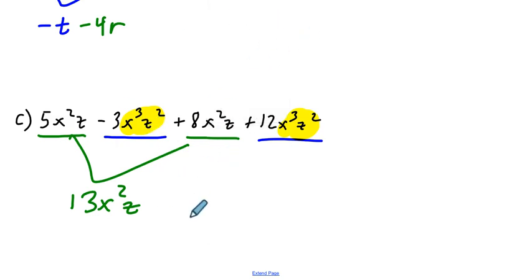So, we can go ahead and combine, right? Negative 3 plus 12 is a plus 9, right? 12 minus 3 is 9. X cubed z squared. And there we go.